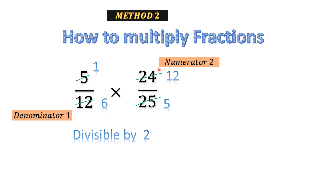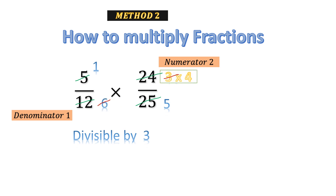Again, is there any common factor between any numerator and denominator? Between 1 and 5, or 1 and 6, or 12 and 5 — no common factor — but for 12 and 6 we can see a common factor. Both 12 and 6 are divisible by 3. So let's cancel them again. 3 multiplied by how much is 6? 3 times 2 is 6, so we write 2. And 3 times 4 is 12, so we write 4.